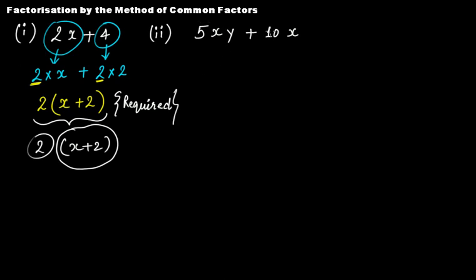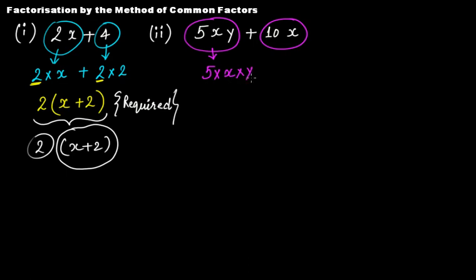Now let's look at the next algebraic expression, which has two terms: 5xy and 10x. Breaking down the first term into its irreducible factor form gives 5 multiplied by x multiplied by y — you cannot break down 5 (prime number), x, or y further. The second term, 10x, is 2 multiplied by 5 multiplied by x in its prime factor form.